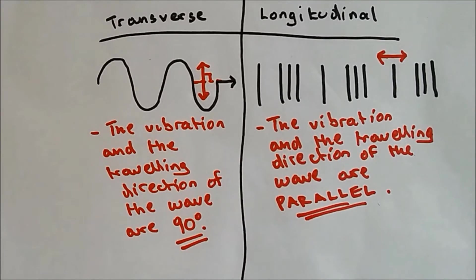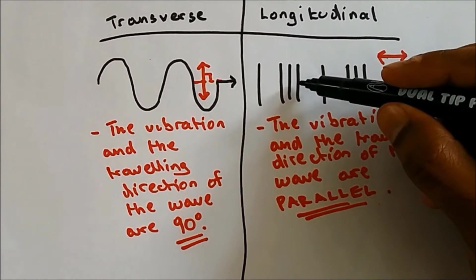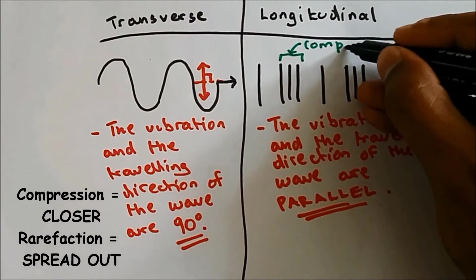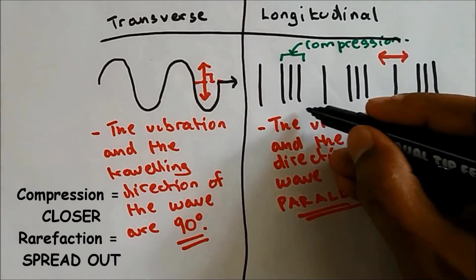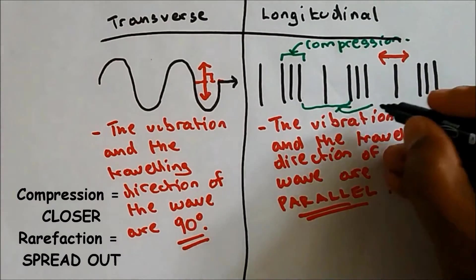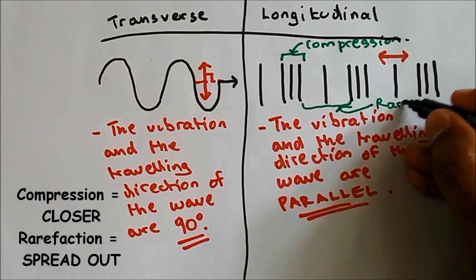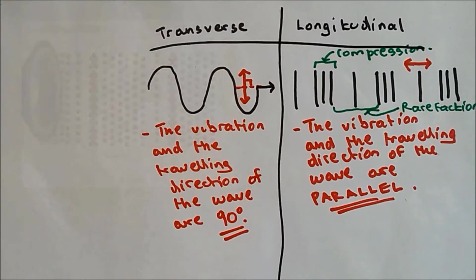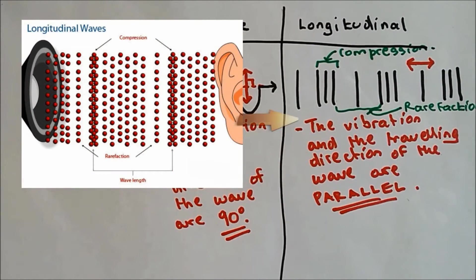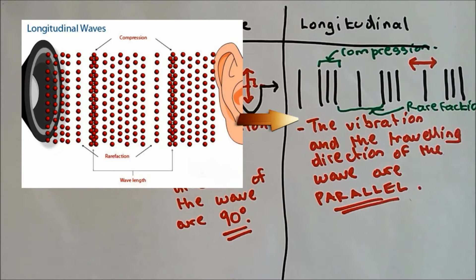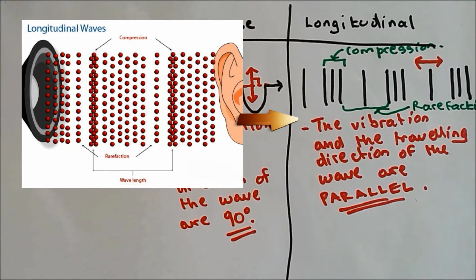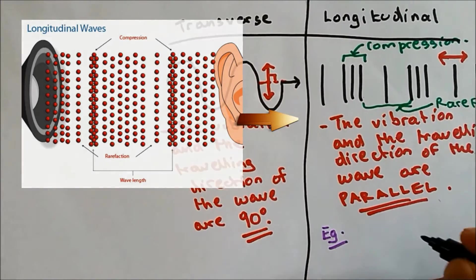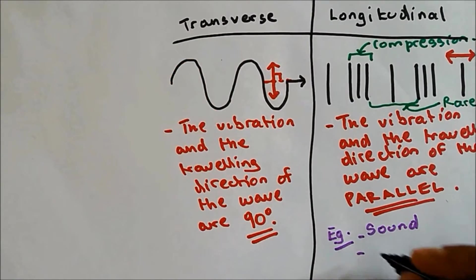For longitudinal wave, you need to also learn that if the particles are more closer together, it's called compression. And if they are further apart, it's called refraction, which means the particles are more spread out. The reason why I'm saying particles because longitudinal is to do with sound wave and sound travel by vibration of particles. So an example of longitudinal would be sound or ultrasound.